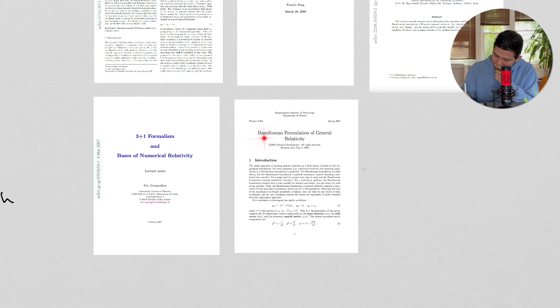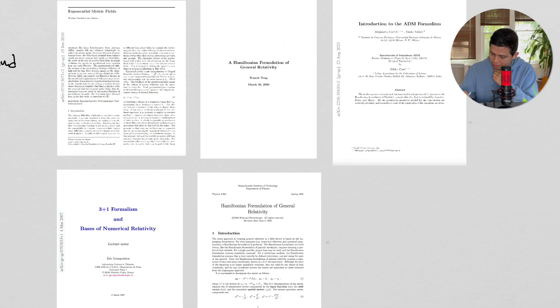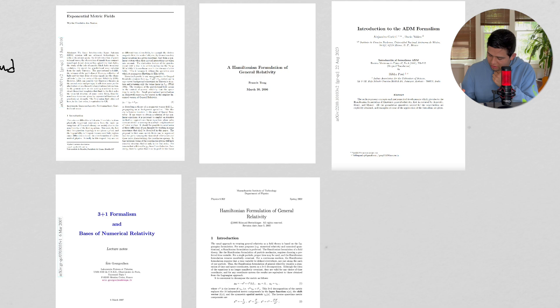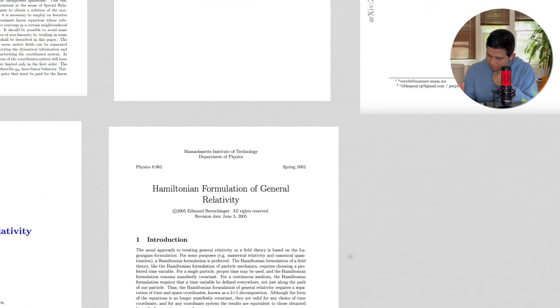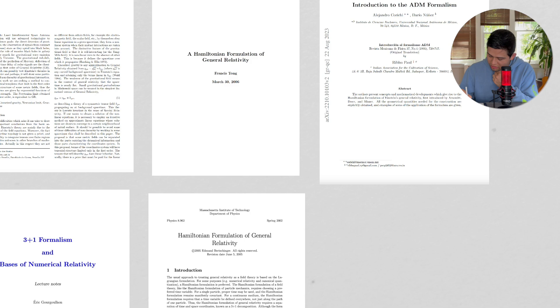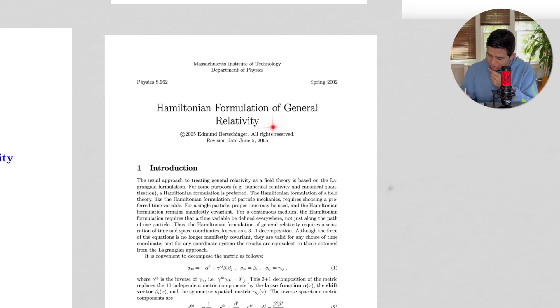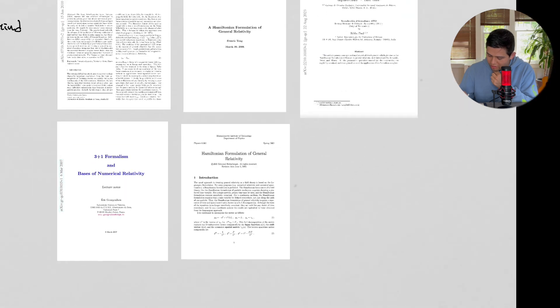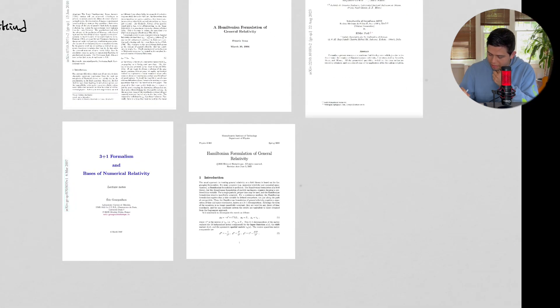And then, the Hamiltonian formulation for general relativity. So again, this is not by Francis Tong. This is, because Francis Tong was 2006. This one was around the same time. This was 2005, but I believe this is a different paper.